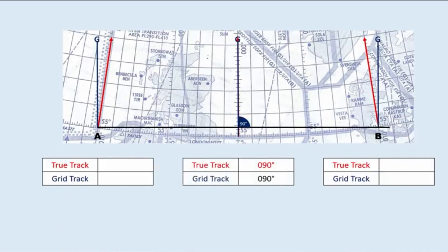We draw a line from A to B and focus on point A, the grid reference (prime meridian), and point B. At the prime meridian, both the true track and grid track are 090°, so grid track and true track are the same there. At point A however, the true track is less than 90° — it is 080° — and the grid track is the angle between grid north (the blue line) and the track from A to B (the black line), which is clearly 090°. At point B, the true track is 100° and the grid track is also 090°.